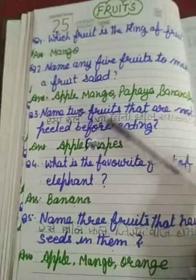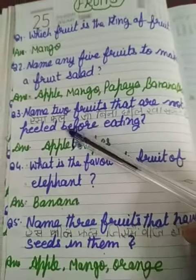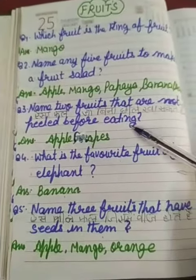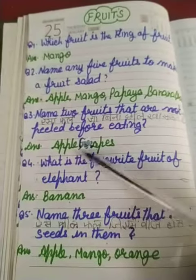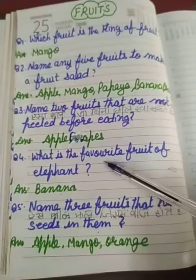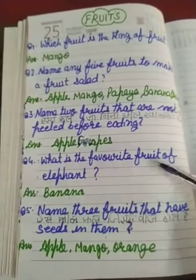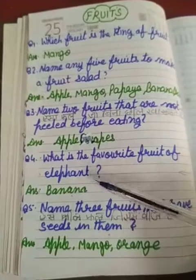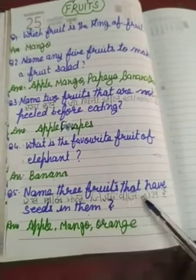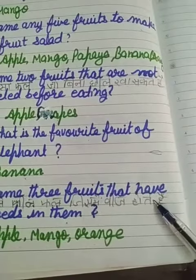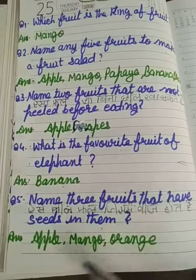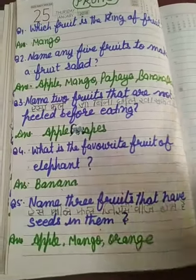Name two fruits that are not peeled before eating. Apple, grapes. What is the favorite fruit of an elephant? Banana. Name three fruits that have seeds in them. Apple, mango, orange.